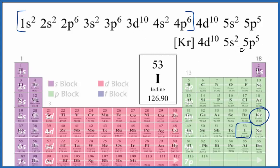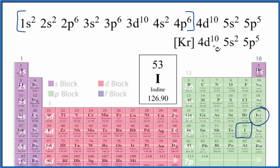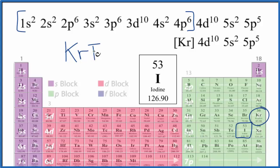There's something interesting here — we have the d orbitals, specifically 4d10. We consider all of these valence electrons except the d orbital, which is full with 10, so it doesn't usually take part in chemical reactions. In general, noble gases don't react except under extreme conditions. Things like krypton and xenon can react because of these d orbitals — under high temperature and pressure you can get compounds like KrF2 or XeO4.